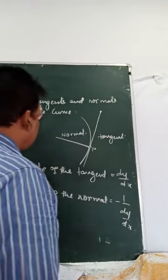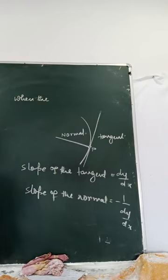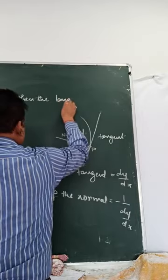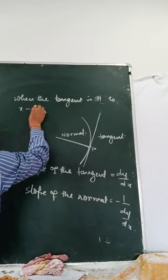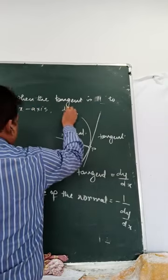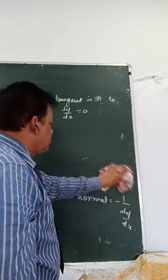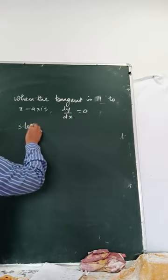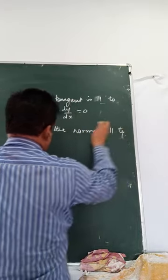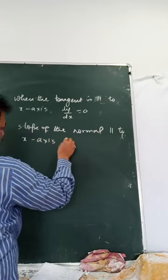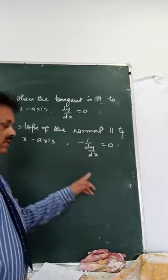We have already studied: when the tangent is parallel to the x-axis, the slope will be equal to 0, that means dy by dx will be equal to 0. Similarly, for the slope of the normal parallel to the x-axis, the same concept applies.